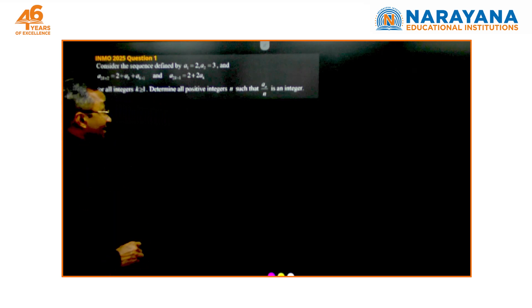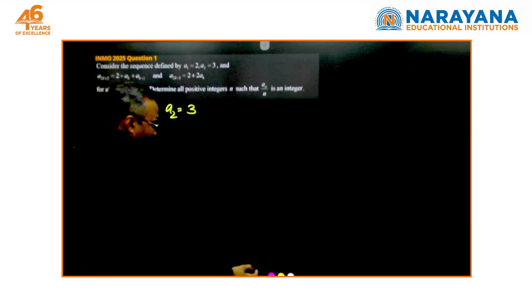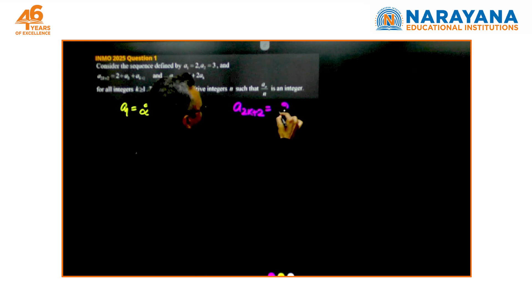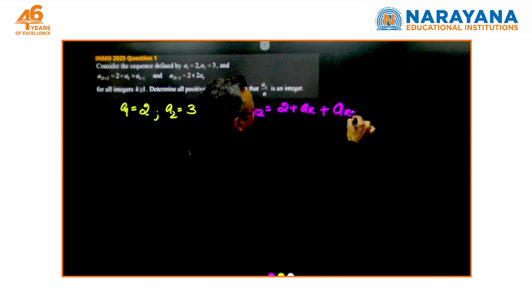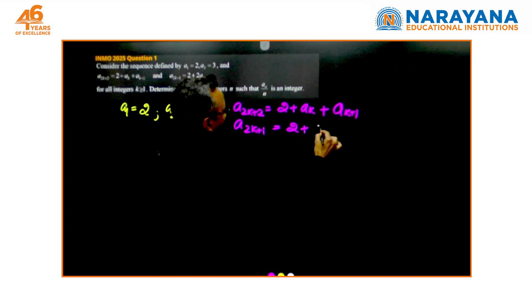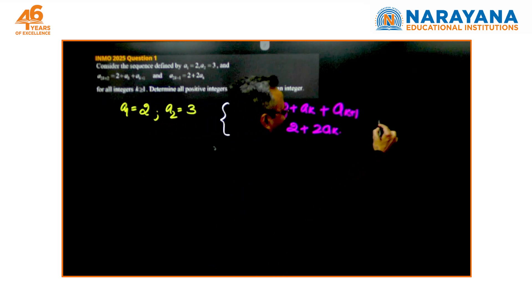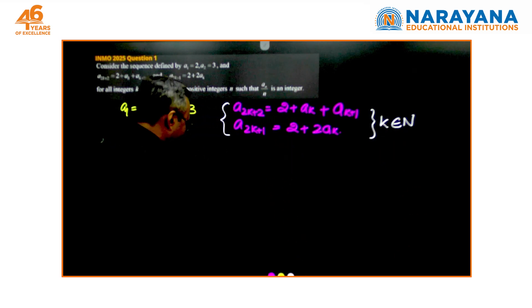The question says: consider a sequence defined by the first two terms a1 is 2, a2 is 3, and the recurrences that are given are a_{2k+2} equals 2 plus a_{k+1} and simultaneously a_{2k+1} equals 2 plus 2a_k. Without much thought given on this, k is a natural number as given, k being an integer greater than or equal to 1.